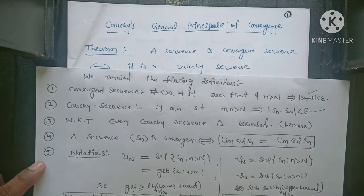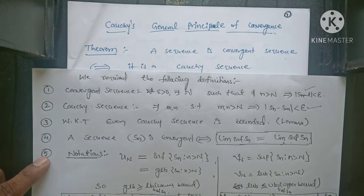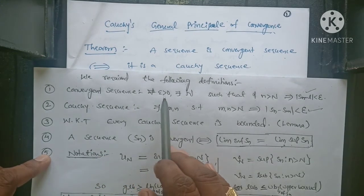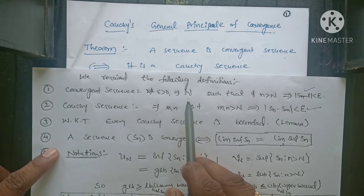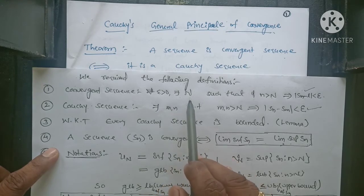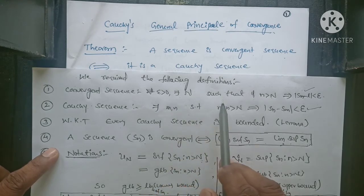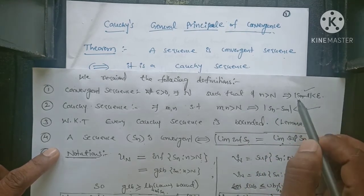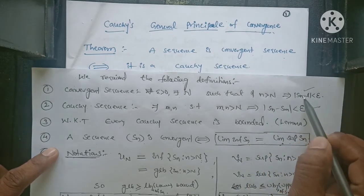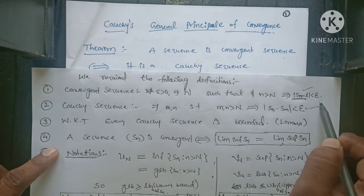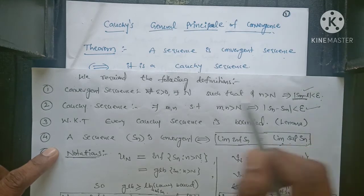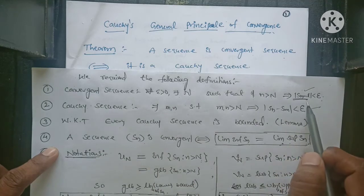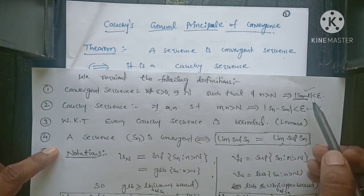What is a convergent sequence? For each epsilon greater than 0, there exists a number capital N — it is a number, not a natural number — such that n greater than capital N implies mod(Sn minus L) less than epsilon. That L is called the limit of the sequence. The sequence is called convergent to limit L.